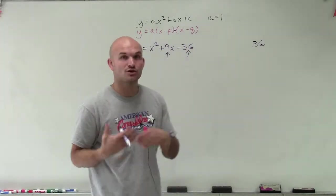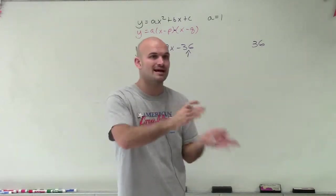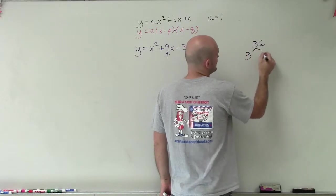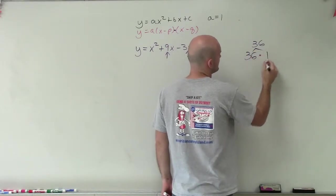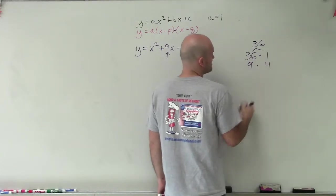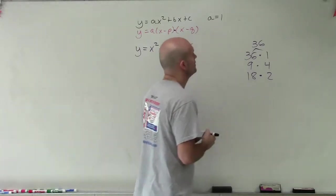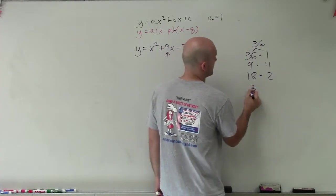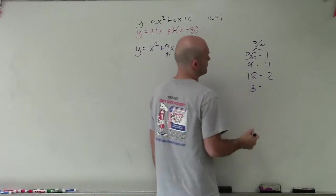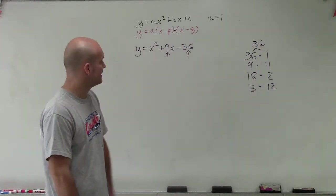In previous examples I showed you which one was negative, then the other one being negative. For here I'm just going to make this quick. The factors of 36 are: 36 times 1, 9 times 4, 18 times 2, and 3 times 12. I think I got all of them.